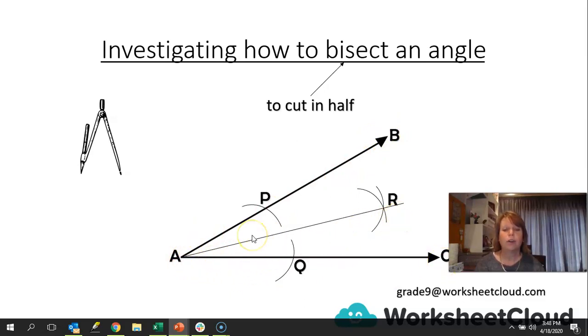And so because it's bisected, ABR and RAC are equal. There, those two dots depict that they are equal. They show us that they are equal. So BAC has been bisected by line AR.